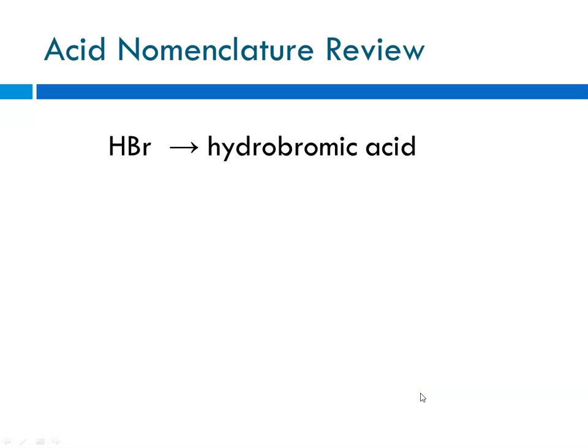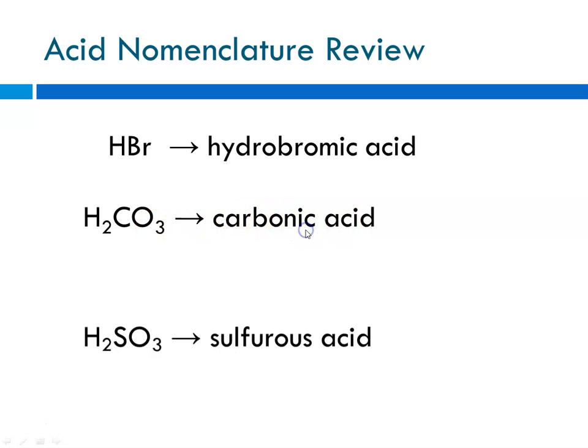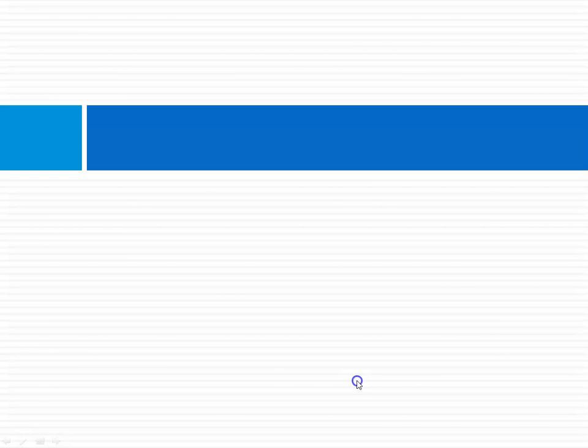Going through some names: HBr, binary, bromide ion, hydrobromic acid, hydro blank ic. Carbonate anion, carbon -ic acid, -ate goes to -ic. This is the sulfite anion, so sulfur -ous, -ite goes to -ous.